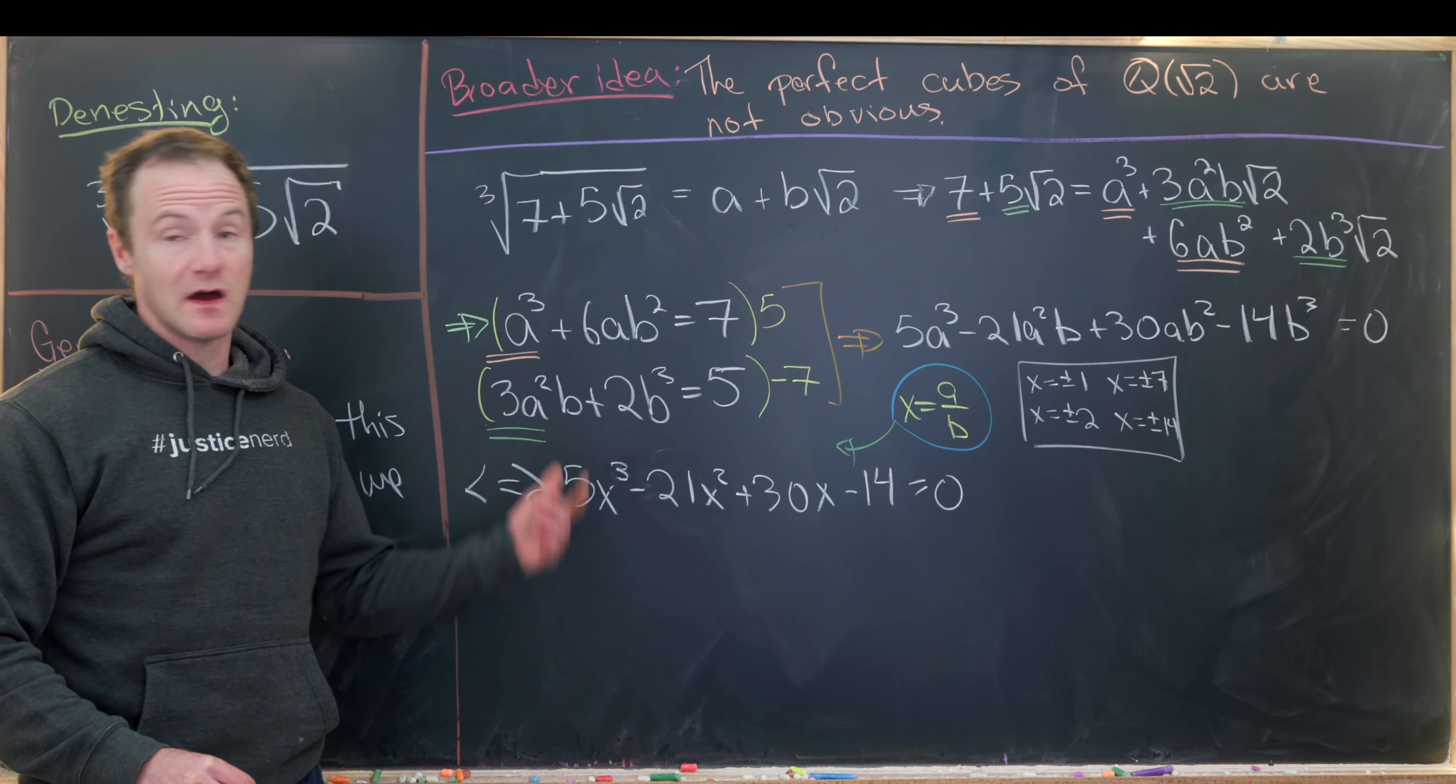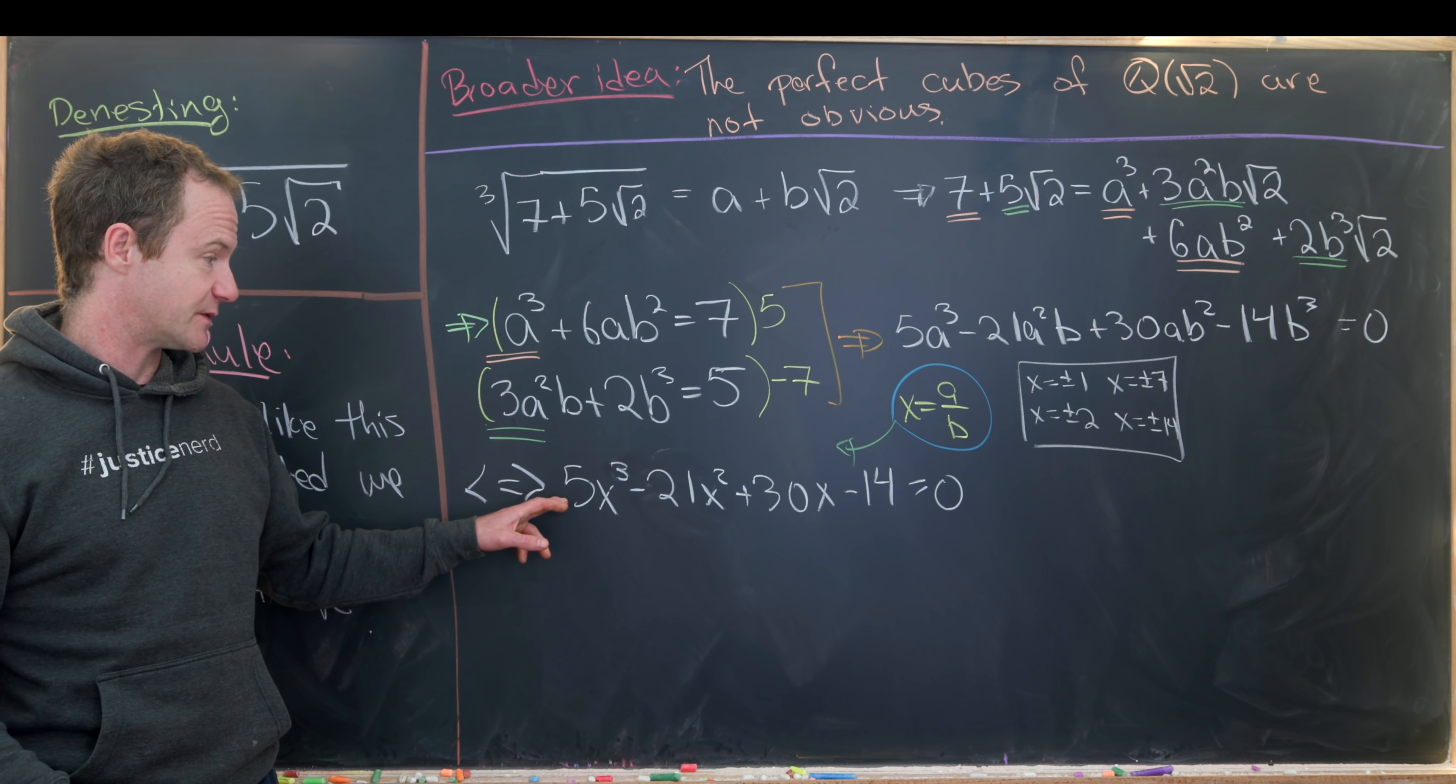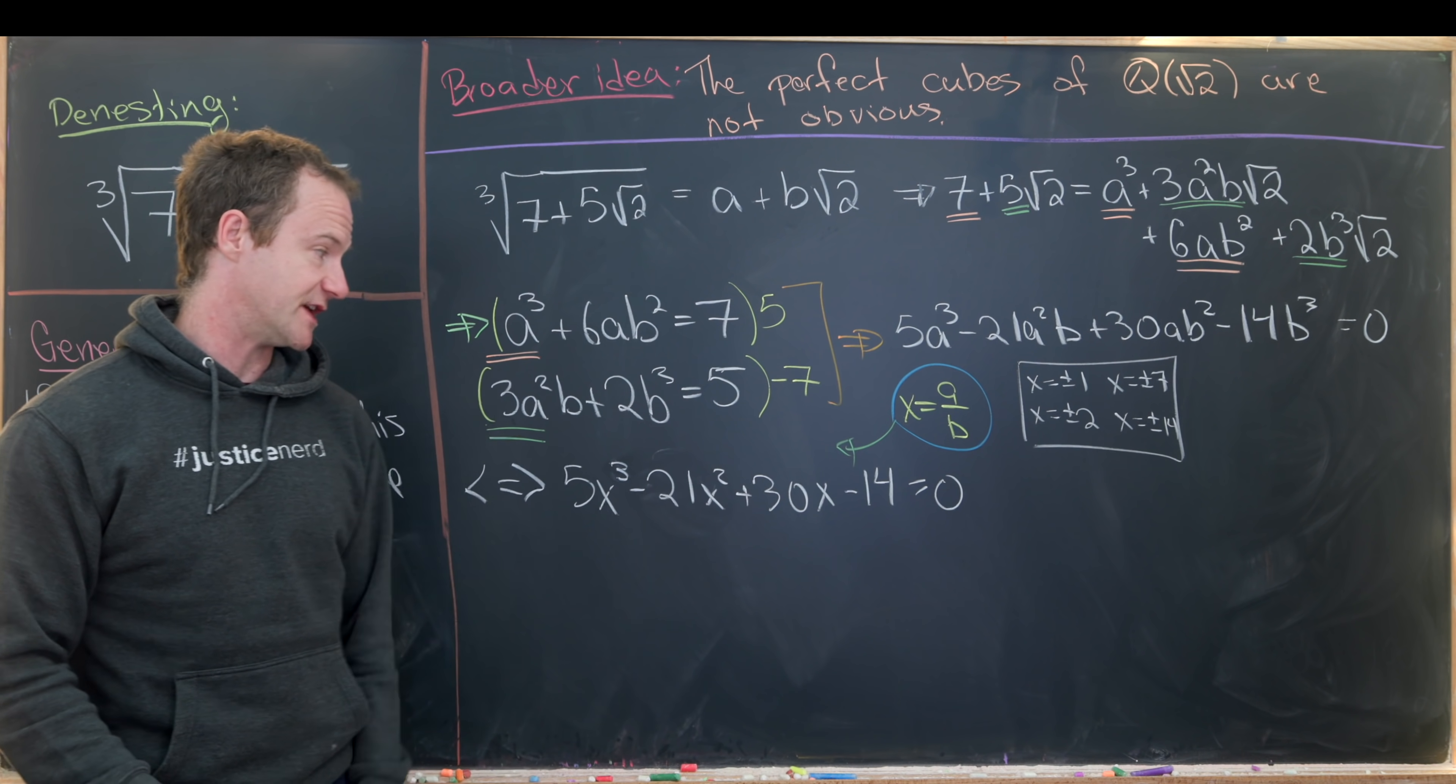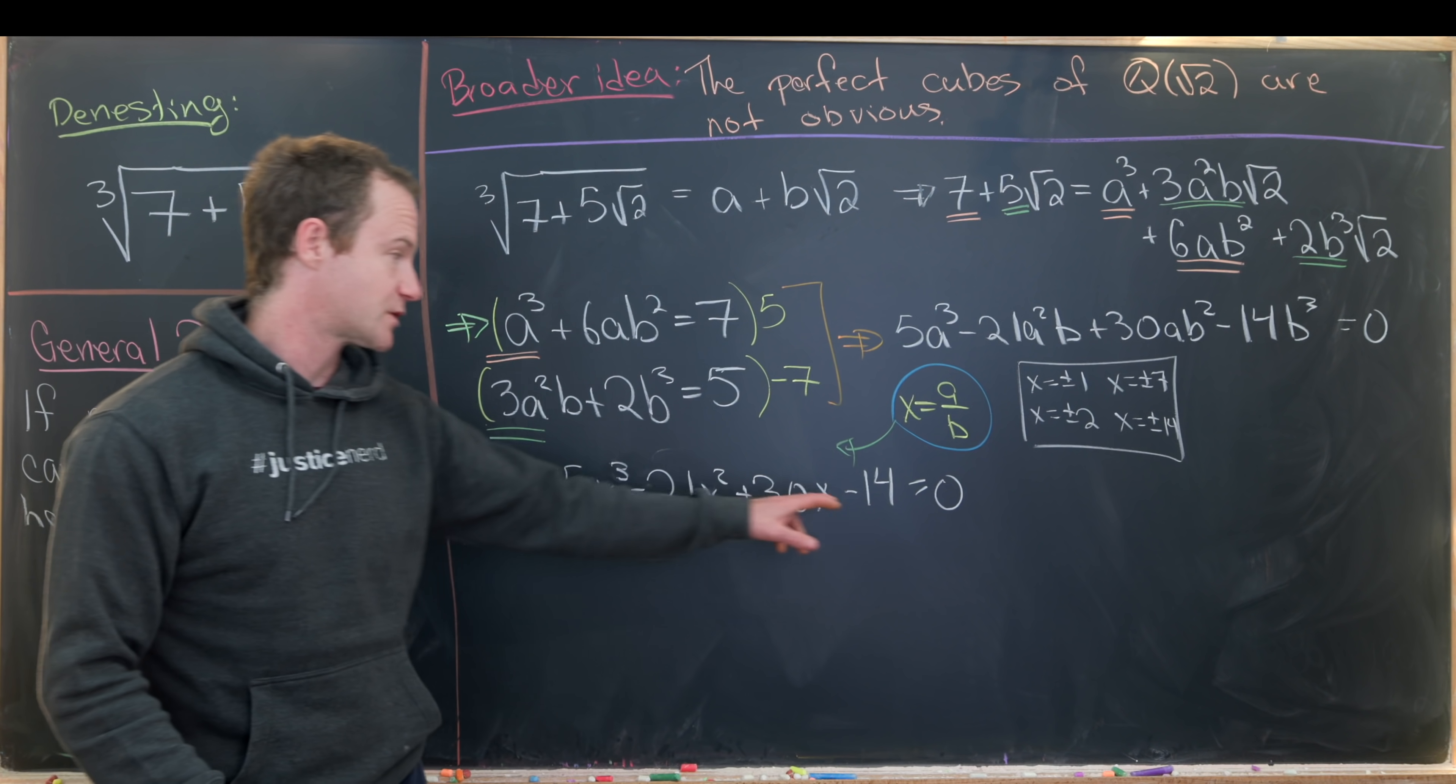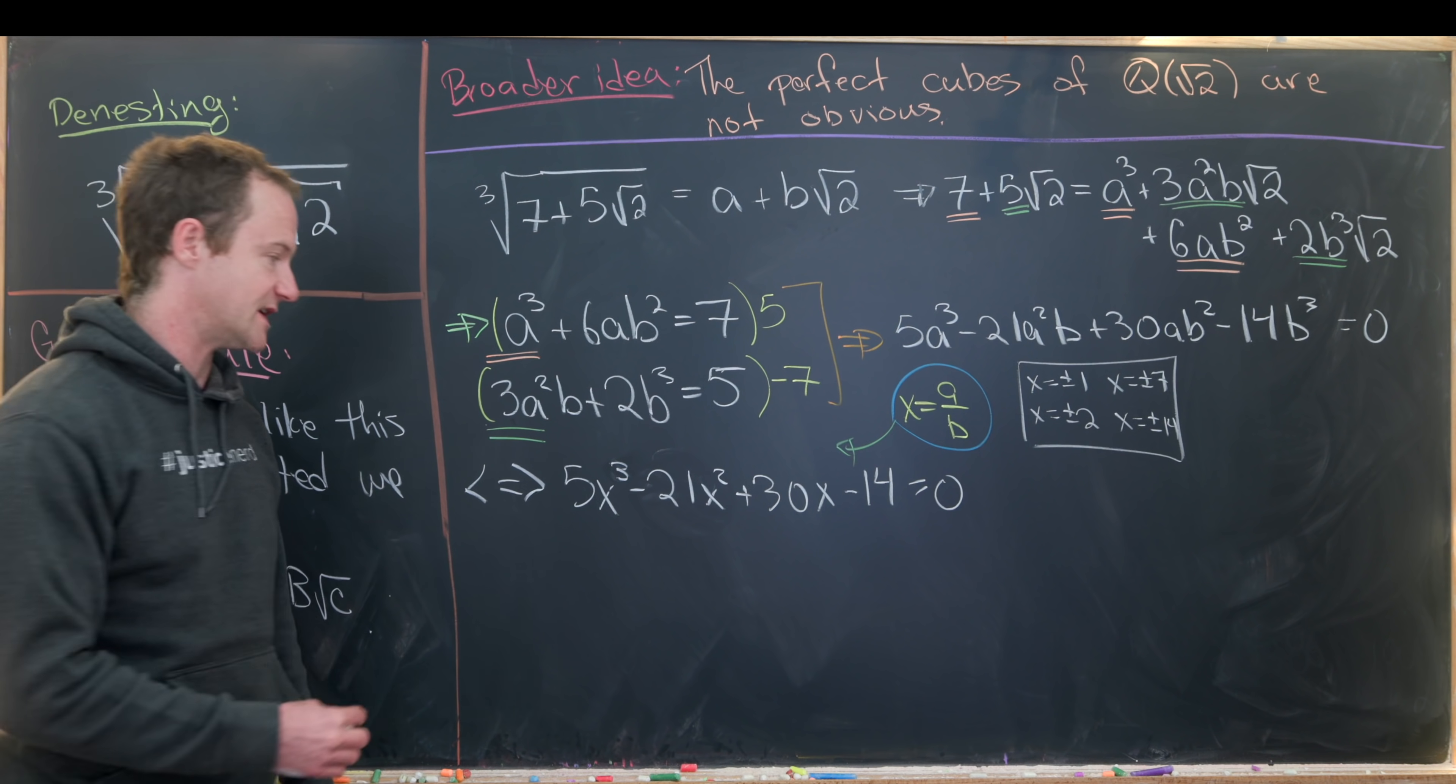But then it turns out that the number 1 is actually a root of this. And we can see that pretty easily. Notice that we have 5 plus 30 is 35. Minus 21 minus 14 will give us zero. So that means that 1 is a root.